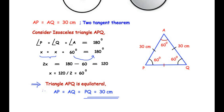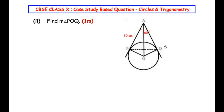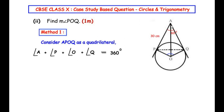Let us move on to the second sub-question: find the measure of angle POQ. There are many methods; here I will show two. Method one: consider APOQ as a quadrilateral. The sum of all angles of a quadrilateral is 360 degrees, so angle A plus angle P plus angle O plus angle Q equals 360 degrees. Angle A is 60 degrees. Using the radius-tangent theorem, since AP is a tangent and OP is a radius, angle OPA equals 90 degrees.